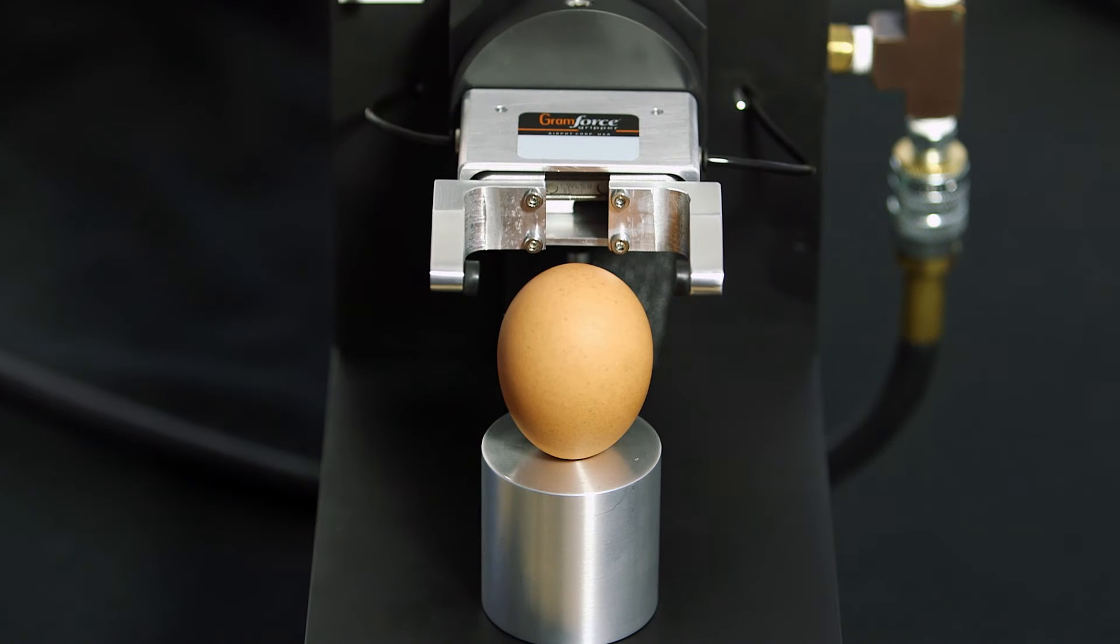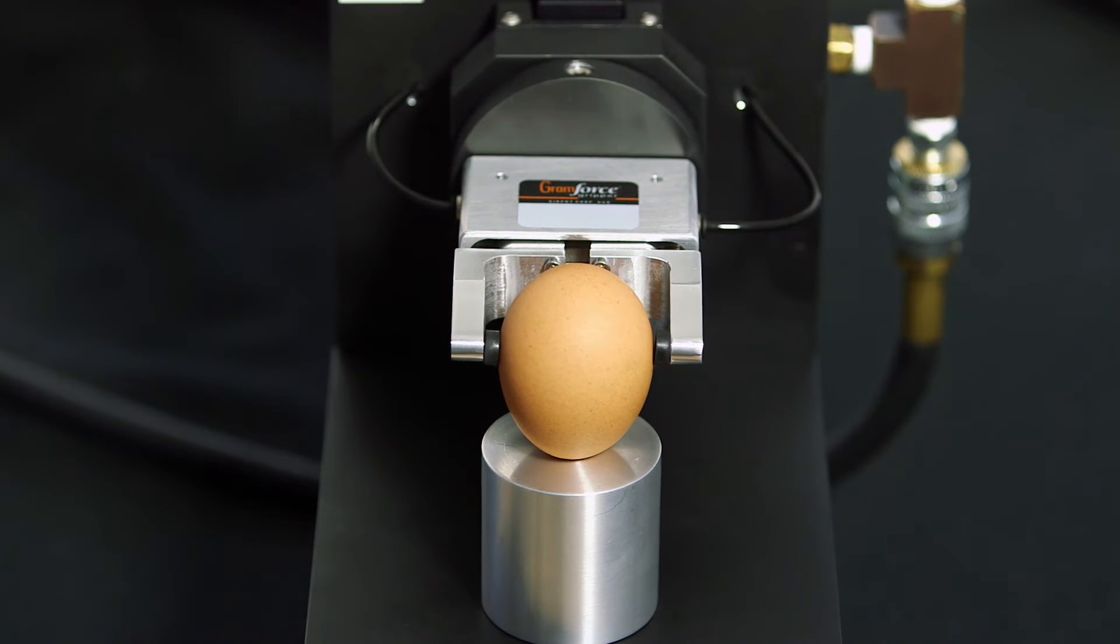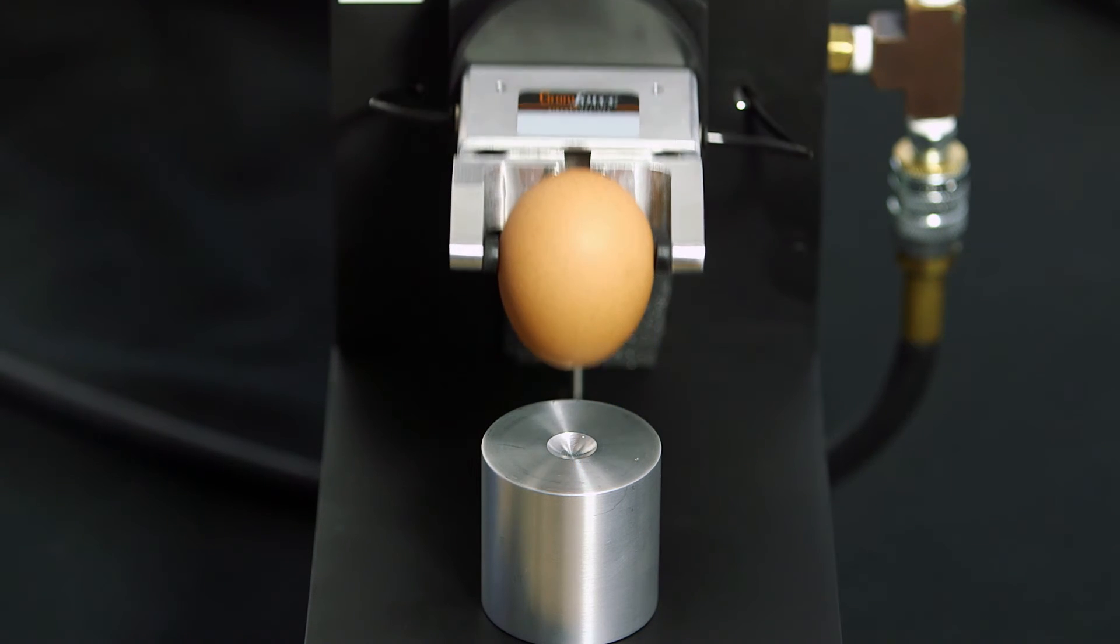In this example, we're gripping a fragile object, in this case an egg. It is being held gently with just 100 grams of force, about a quarter of a pound.